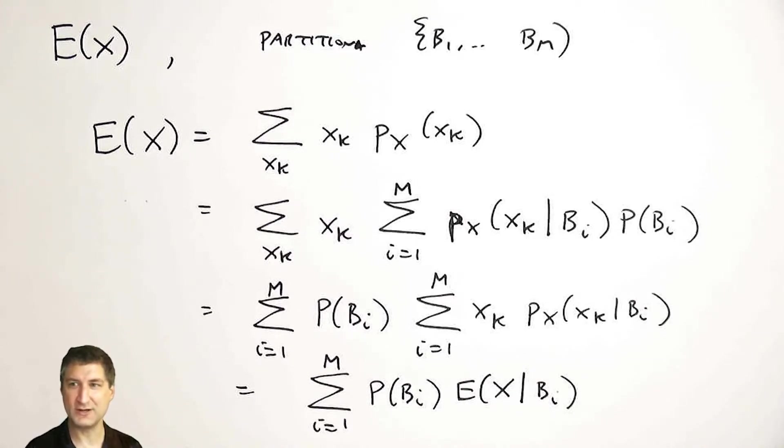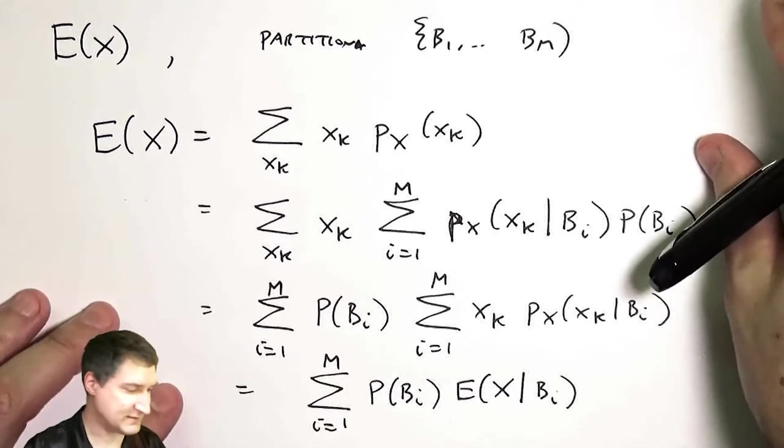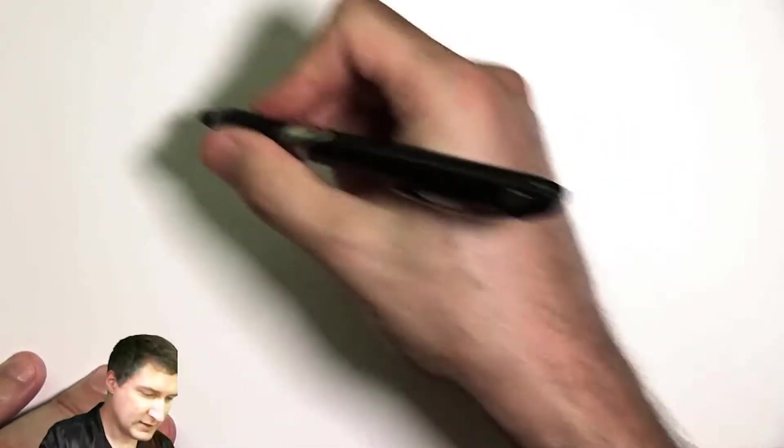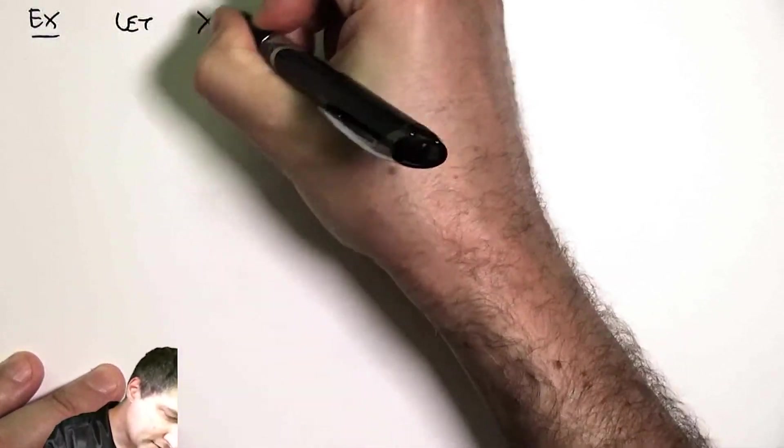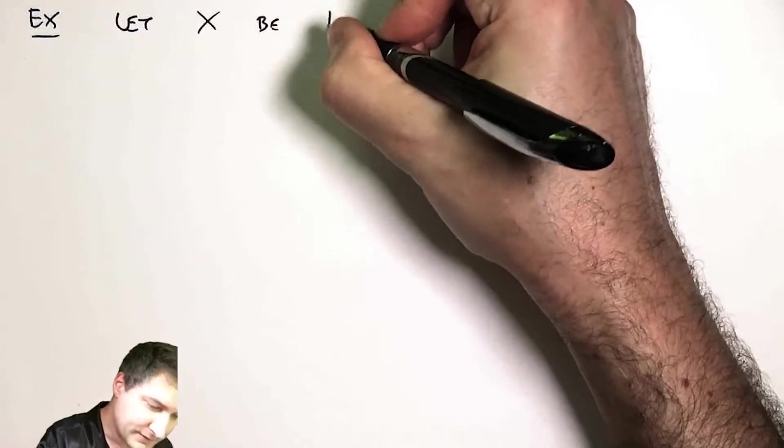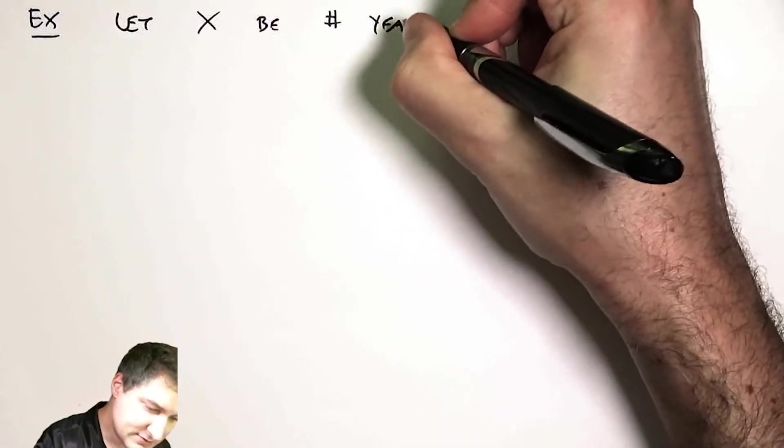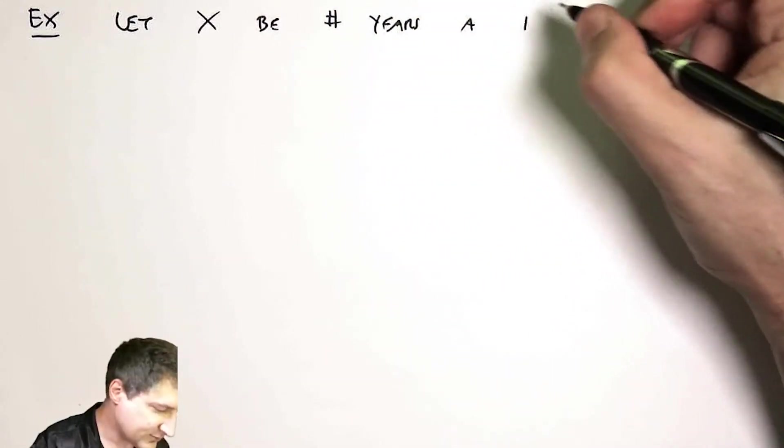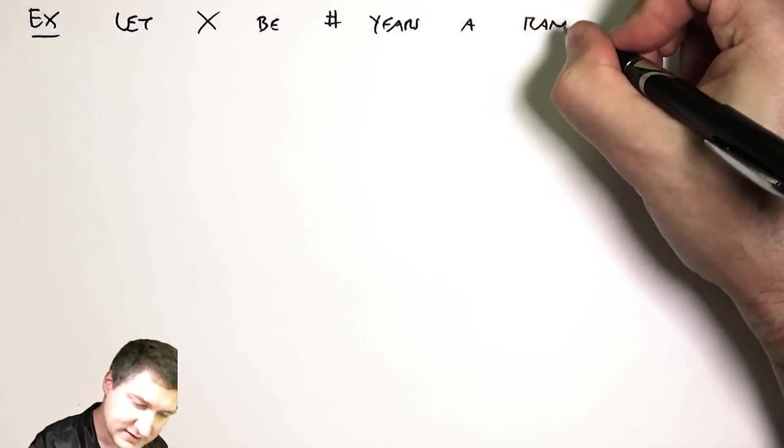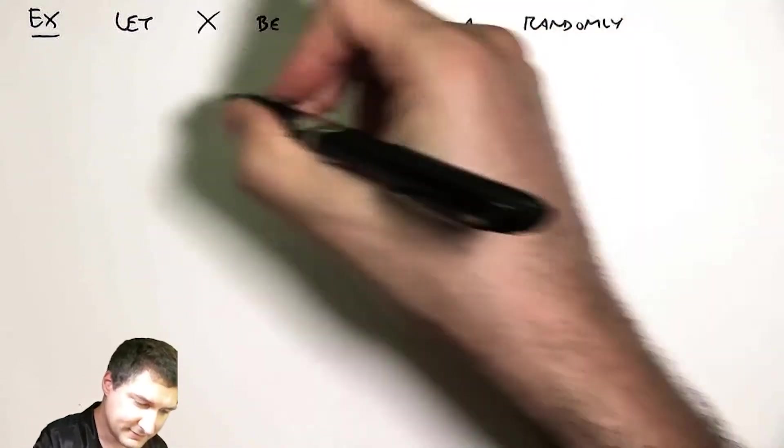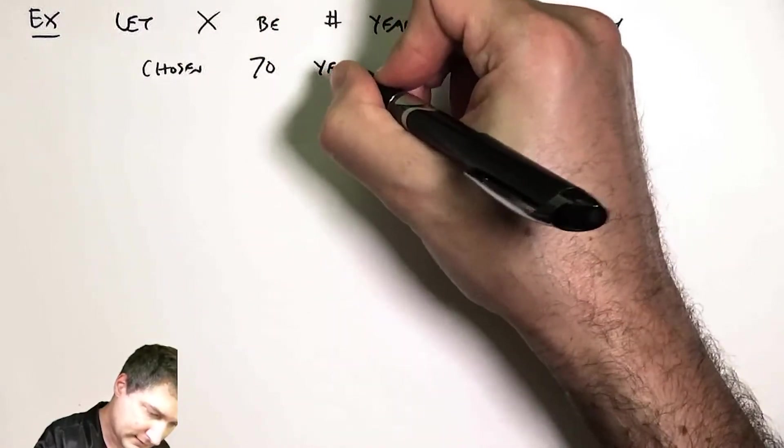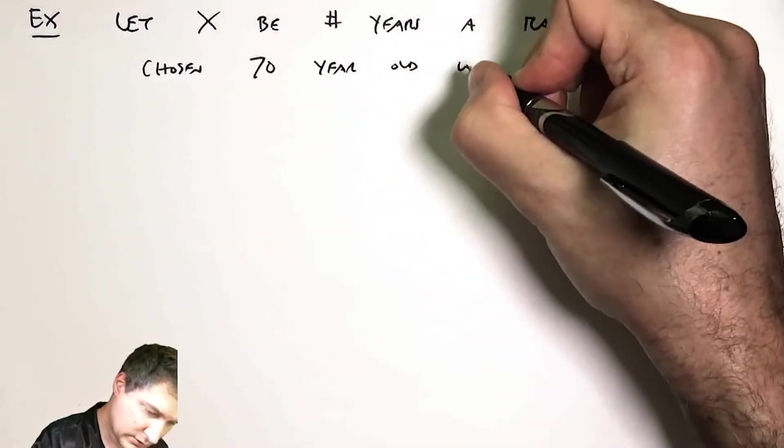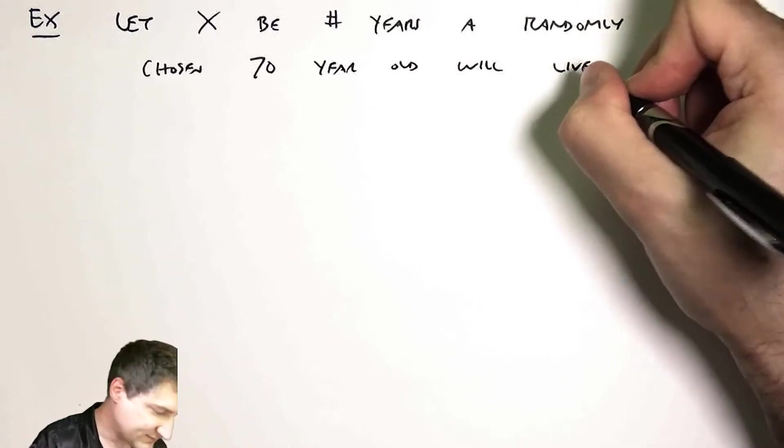And so to make this more concrete, let me just do a specific example. Let X be the number of years that a randomly chosen 70 year old person will live beyond 70.